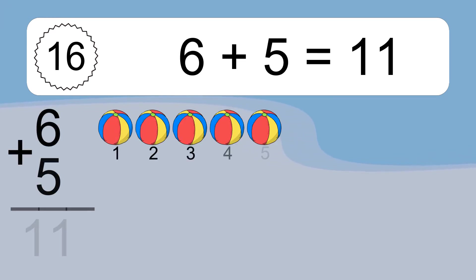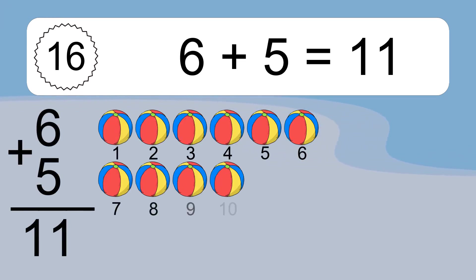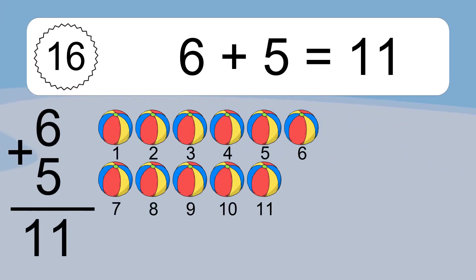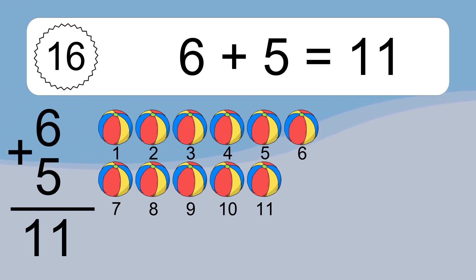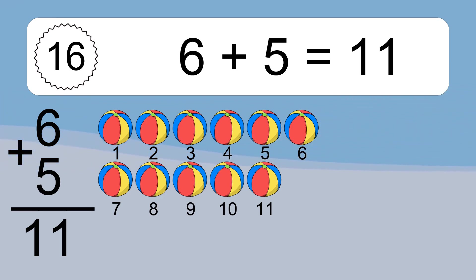6 plus 5 equals what? 6 plus 5 equals 11. Let's count it. 1, 2, 3, 4, 5, 6, 7, 8, 9, 10, 11.